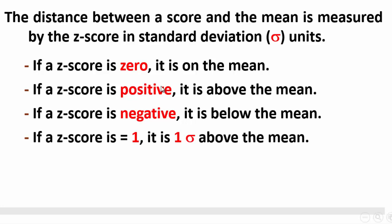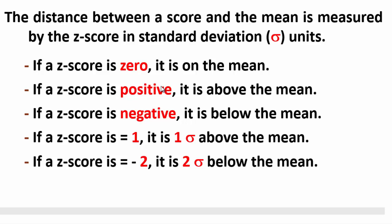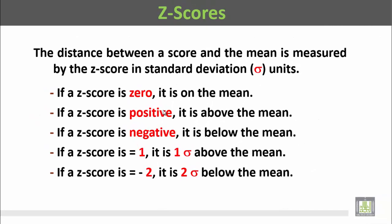إذا كانت قيمة z score تساوي واحد، هذا يعني أن القيمة تبتعد عن المتوسط الحسابي بمقدار واحد سيجما — واحد انحراف معياري. If z score is equal to minus two, it's two sigmas below the mean. إذا كانت قيمة z score هي سالبة 2، فهذا يعني أن القيمة تبتعد عن المتوسط الحسابي بـ 2 انحراف معياري تحت المتوسط الحسابي.